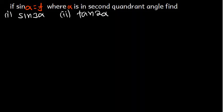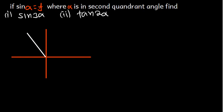Since alpha is in the second quadrant, we need to draw a Cartesian XY plane. Here is our XY plane, and the second quadrant is going to be here. We place our angle alpha in the second quadrant, making a 90-degree angle.